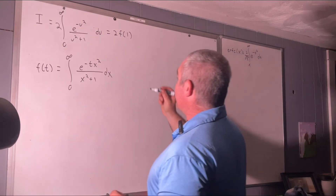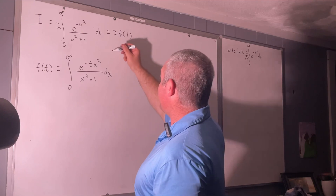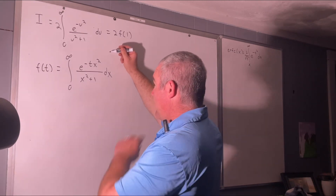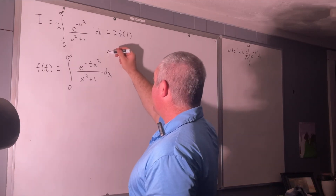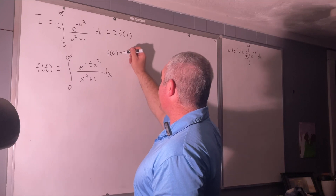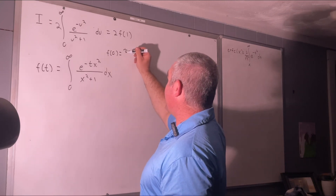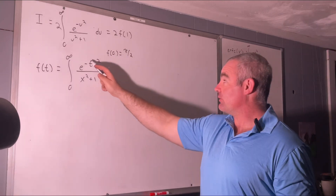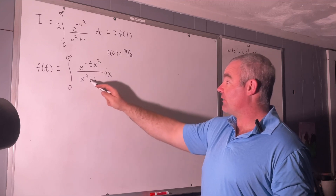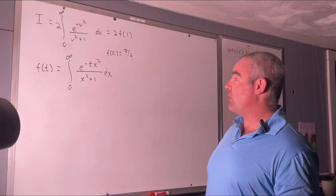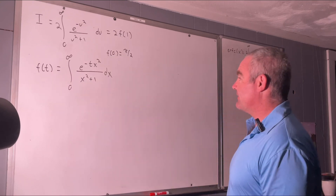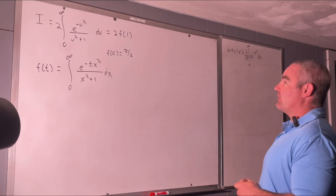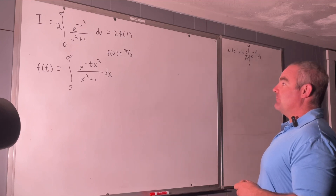We can also say that f evaluated at 0 is π/2. If you plug in 0 for t, we'll get 1 over x squared plus 1 as our integrand, making the whole thing equal to π/2.